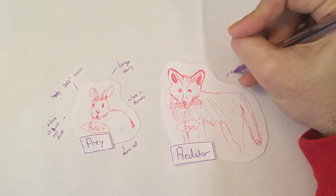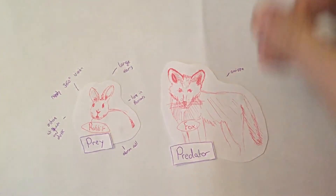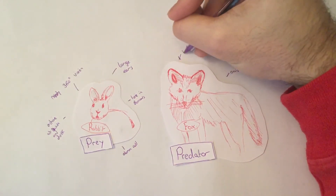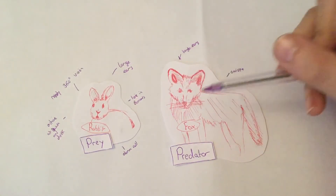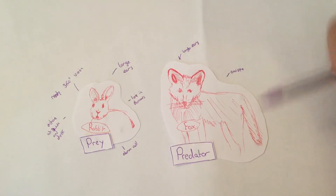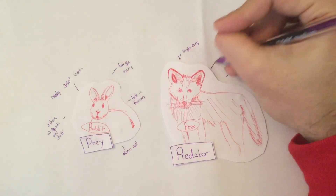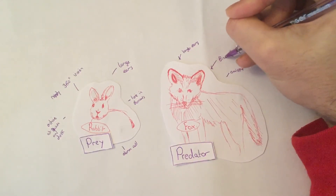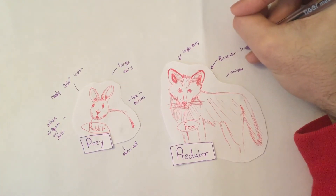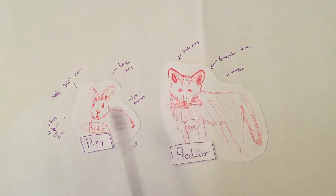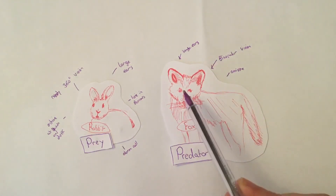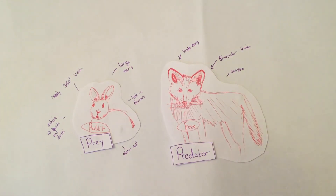The fox also has large ears, but in this case they are there to help it find prey rather than to run away from prey. It also has a different type of vision — binocular vision. "Bi" meaning two, and binocular vision is really good for depth perception, to be able to see how close things are to you. This binocular vision helps the fox to locate its prey a lot better.